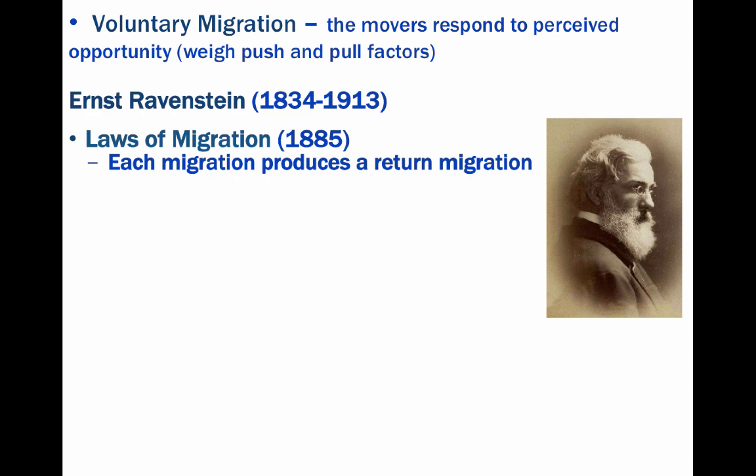Also, most migrants only move a short distance, and most migration proceeds step by step and is rural to urban. This began on a large scale with the industrial revolution in the 18th century in Europe and the United States, when job opportunities opened up in factories in urban areas. This process is now taking place in the developing economies of South America, Africa, and Asia where industrialization has been occurring.